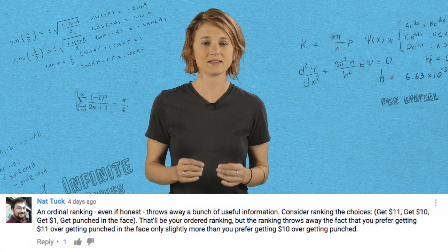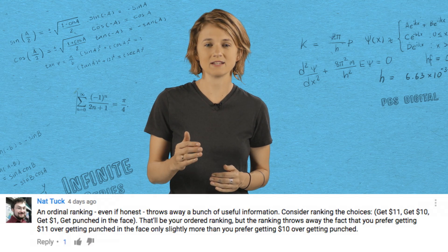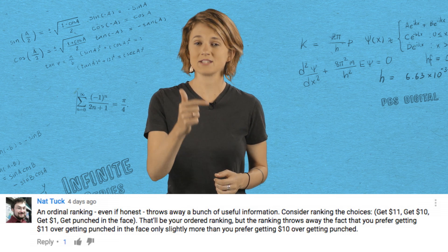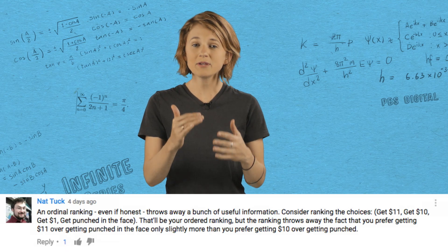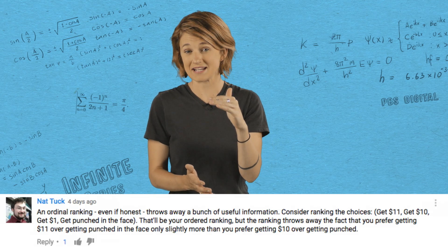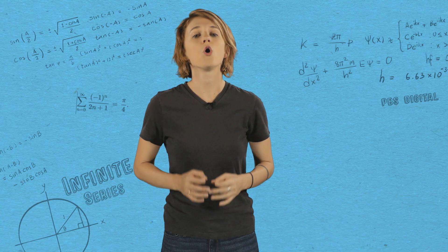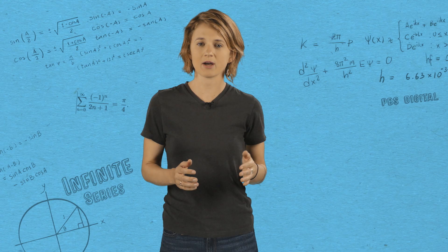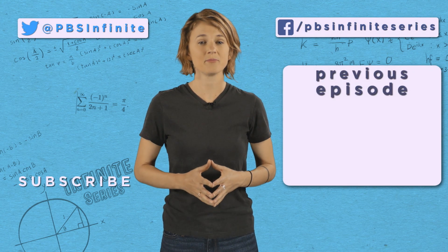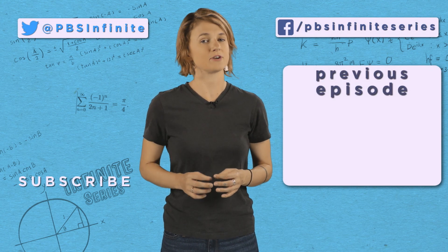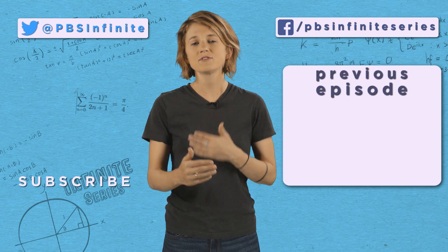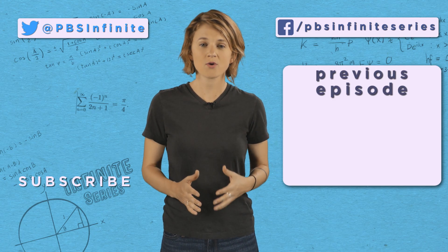And thanks to Nat Tuck for making me laugh out loud. Here's their comment: an ordinal ranking, even if honest, throws away a bunch of useful information. Consider ranking the choices: get $11, get $10, get $1, get punched in the face. That'll be your ordered ranking. But the ranking throws away the fact that you prefer getting $11 over getting punched in the face only slightly more than you prefer getting $10 over getting punched in the face. Ordinal voting, or ranked voting, just provides a ranking. But in cardinal voting, you can also assign each candidate a score—for example, my score for get $11 is plus 11, for get $10 is plus 10, for get $1 is plus 1, and for get punched in the face is minus a million. There are a bunch of different ways to implement cardinal voting, each with their own set of pros and cons.